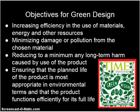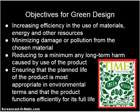When designing things, there are certain objectives you need to consider. First, you need to increase your efficiency in the use of materials and energy. You need to balance both energy consumption and material usage, because if you design something to use fewer materials, you might find it ends up using more energy down the road — a net loss. Minimize damage and pollution from materials and processes. Reduce to a minimum any long-term harm caused by use of the product. Ensure the planned life of the product is most appropriate in environmental terms and that it functions efficiently for its full life.